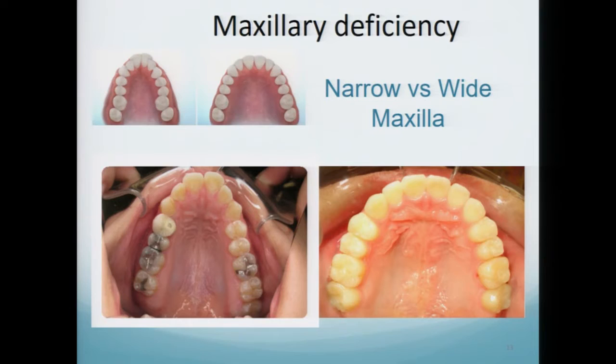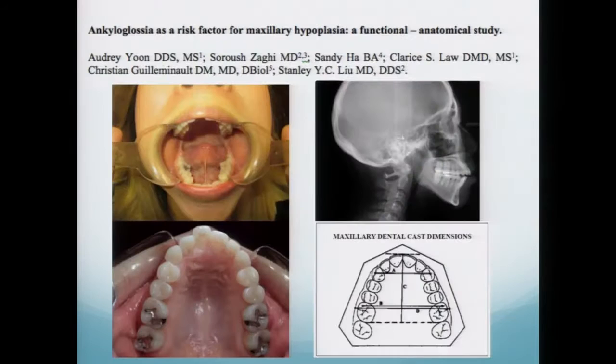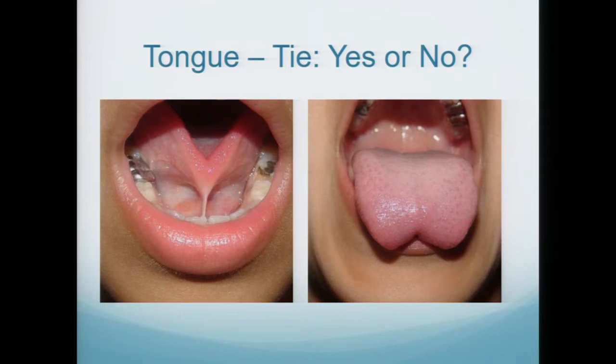Why is it important to have good range of motion? It's important because your tongue needs to exercise to maintain its tone. When the tongue is restricted, it's not able to exercise and it loses tone. When it loses tone, the tongue falls back — this is the base of tongue obstruction you get in sleep apnea. Oftentimes the tongue is so weak that even when standing up, it falls into the throat, and these people will come into my clinic with a forward head posture.